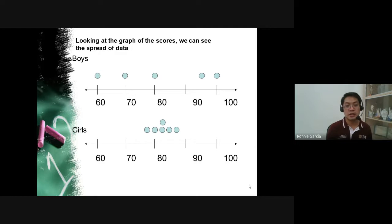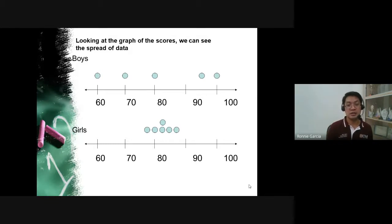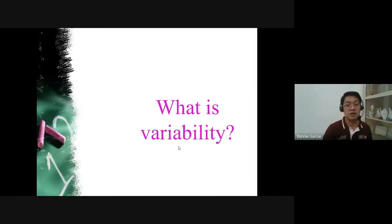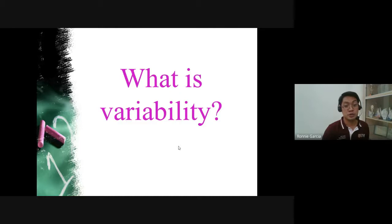The more uniform the data, the better — we prefer data that is closer together, meaning the students have similar ability. The boys had scores ranging from very low to very high, while the girls scored almost the same. Between the two, the girls show better performance in terms of variability. If we look at the measures of variability, the girls win.